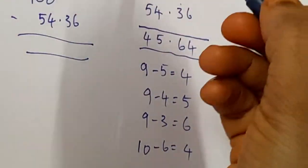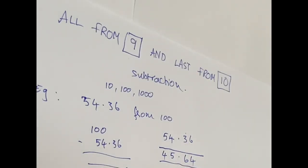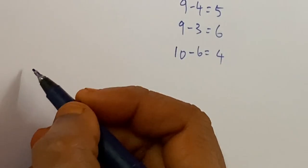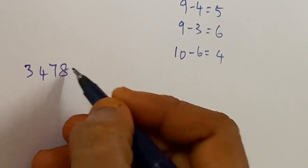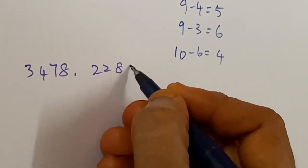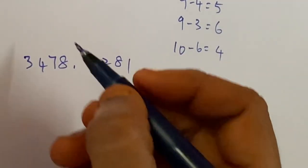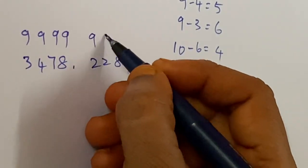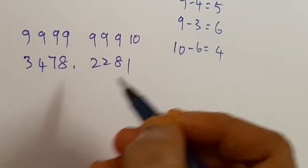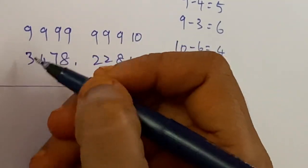Take another example. Subtract 3478.2281. We have to subtract all from 9, so 9999, 9910, and the last one with 10. So this is the answer. I am writing on paper, but you can calculate in your mind.